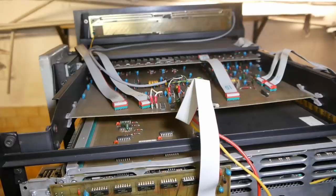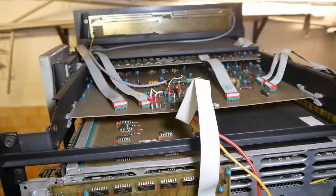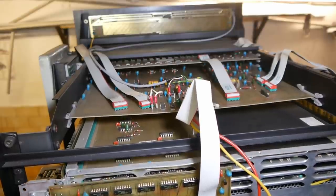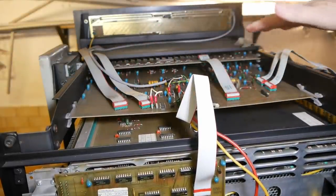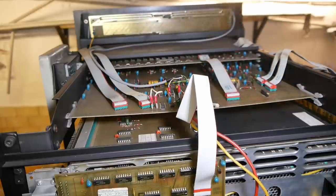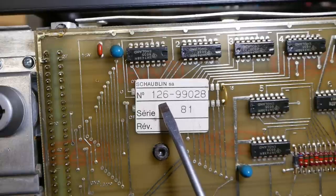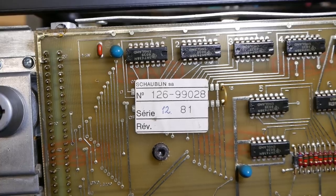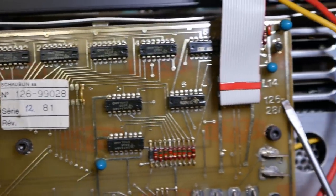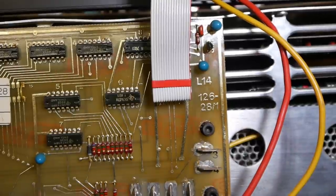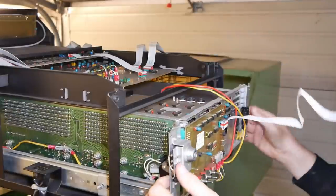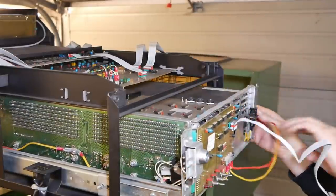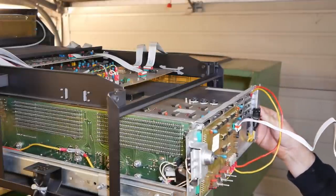It's pretty interesting the way that Schaublin integrated this. You've got a rack here with the actual Data General Nova computer, and then Schaublin has added their own boards above, beside, to the back and to the front. It appears that this was the Schaublin internal project number 126, because 126 kind of shows up everywhere. So the whole computer pulls out on its rack.